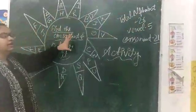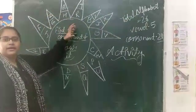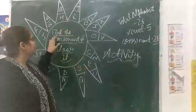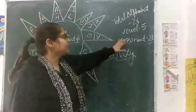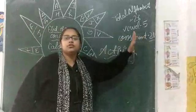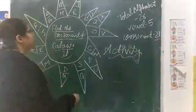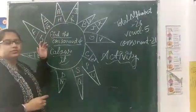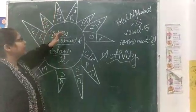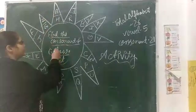So, here on the sun, 26 alphabets are written over here. So, we will find the consonant and color it. So, let's start from here. So, A is our vowel. So, we not color the vowel. We have to color the consonant. Okay?